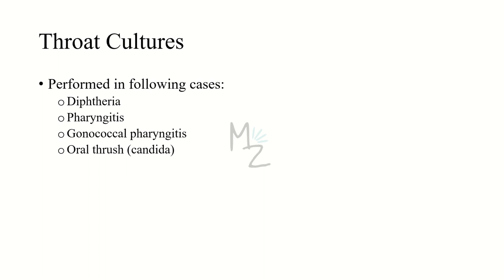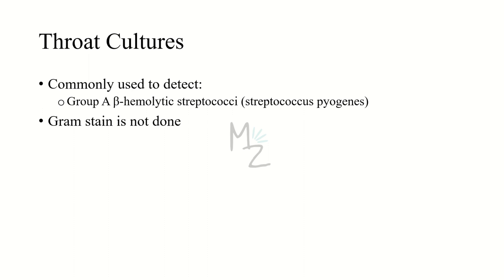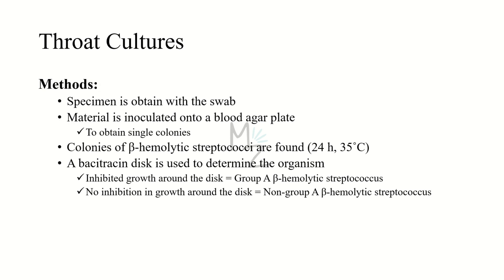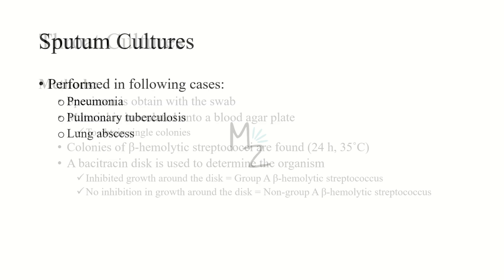Throat cultures are performed in diphtheria, pharyngitis, gonococcal pharyngitis, and oral thrush caused by Candida, and are used to detect group A beta-hemolytic streptococci (Streptococcus pyogenes). Gram stain is typically not done on throat swabs because it is impossible to distinguish normal flora streptococci from S. pyogenes. The swab should touch the posterior pharynx, both tonsils, and tonsillar fossae, then inoculated onto a blood agar plate. If beta-hemolytic colonies appear after 24 hours at 35°C, a bacitracin disc test determines whether the organism is group A streptococcus.